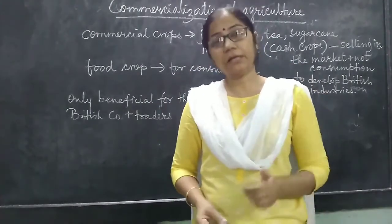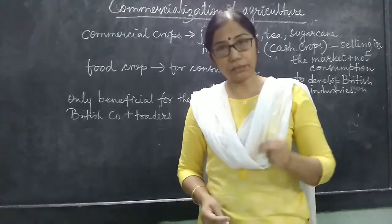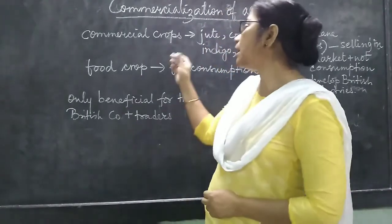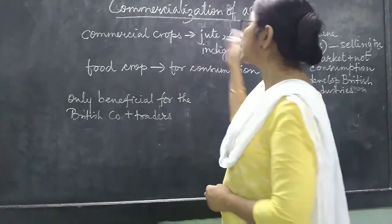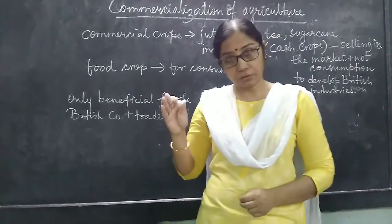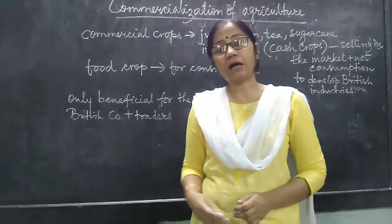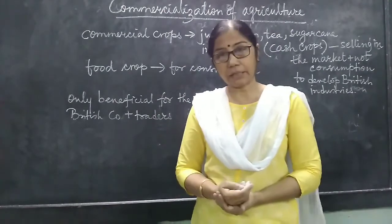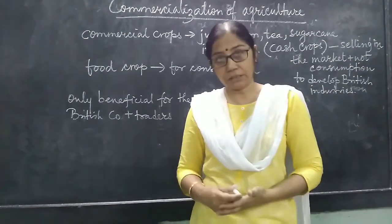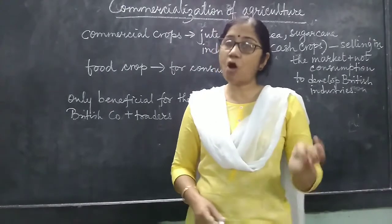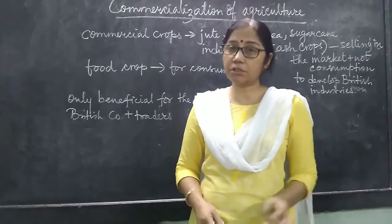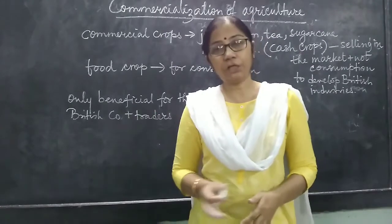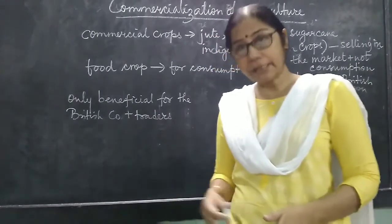Now crops are divided into two categories. There are commercial crops or cash crops — the crops that are grown and sold in the market for industries — like tea, coffee, jute, cotton, rubber, etc. During the British rule it was indigo also.